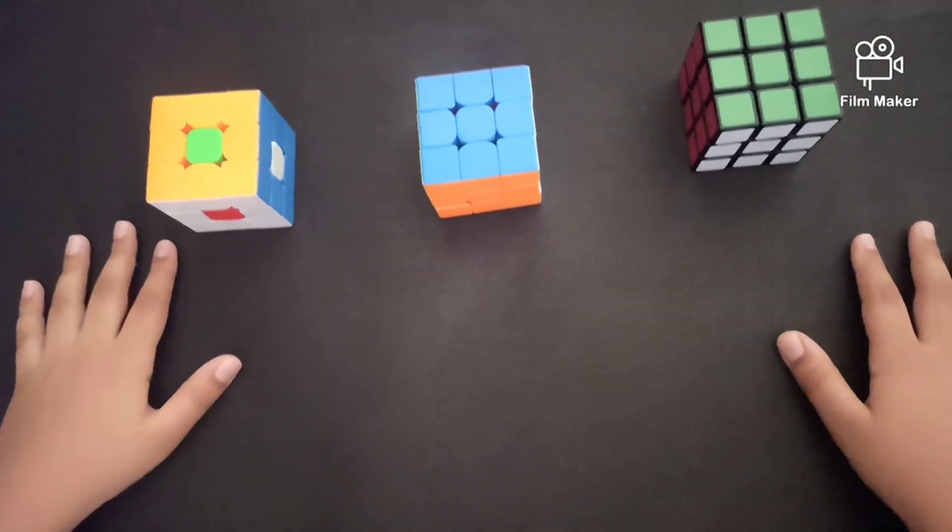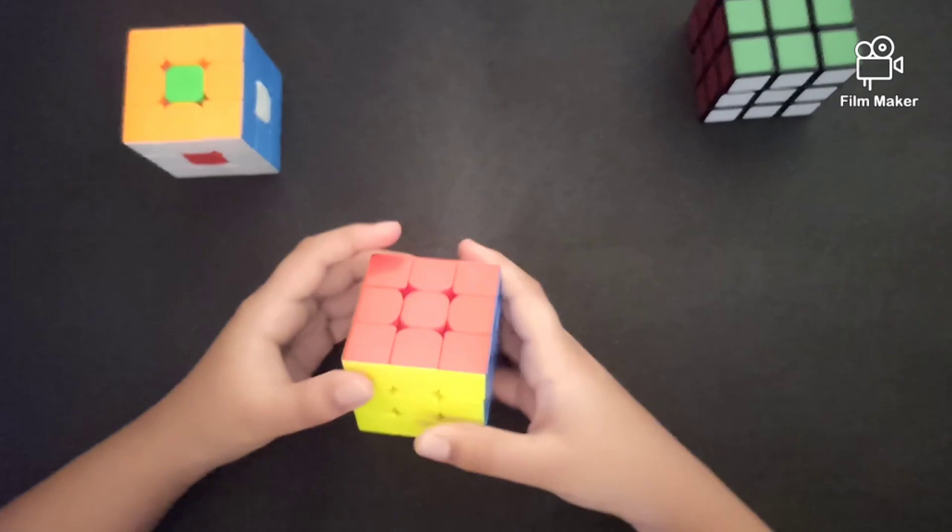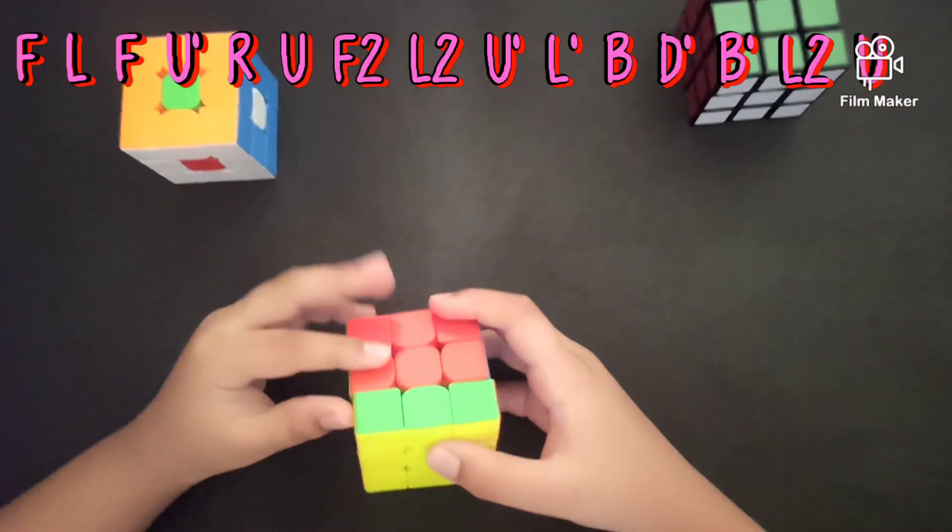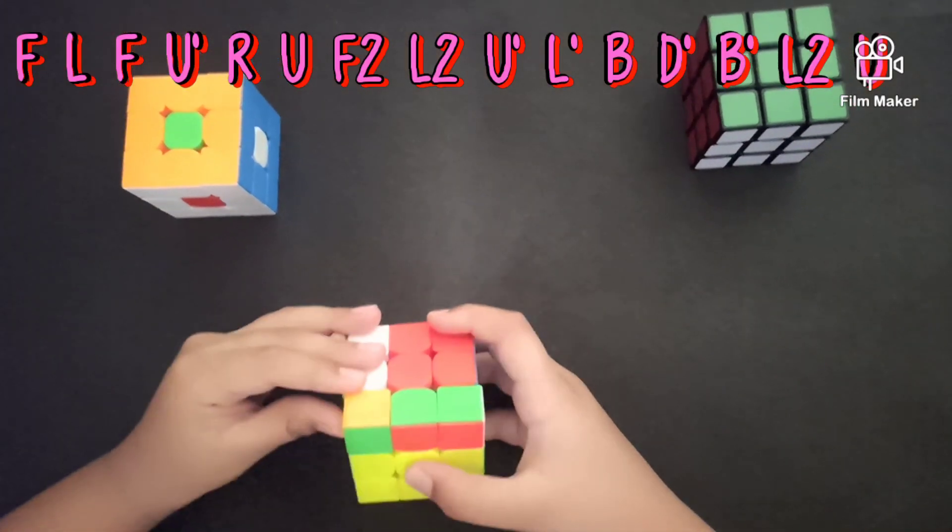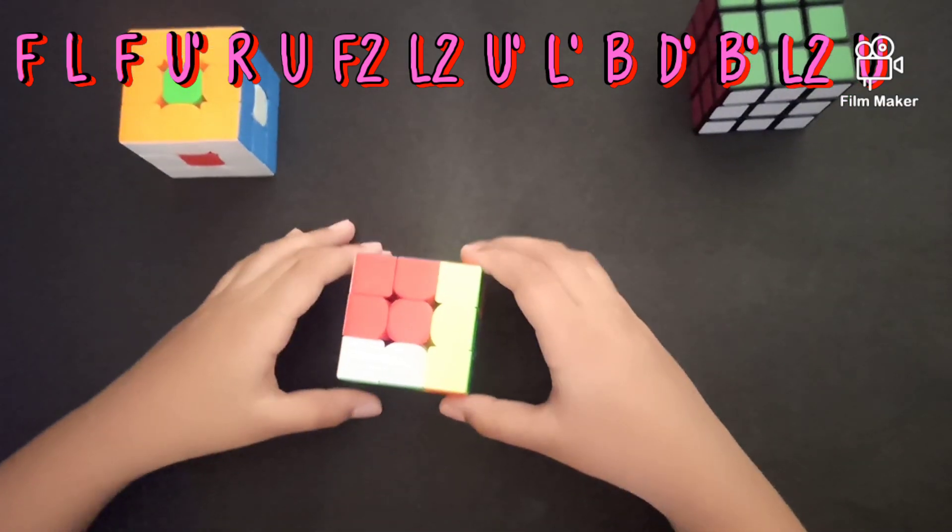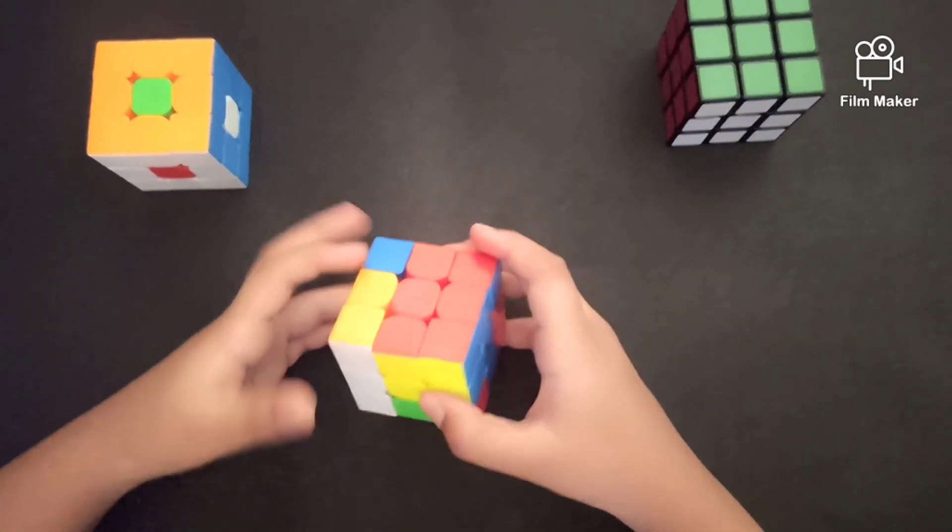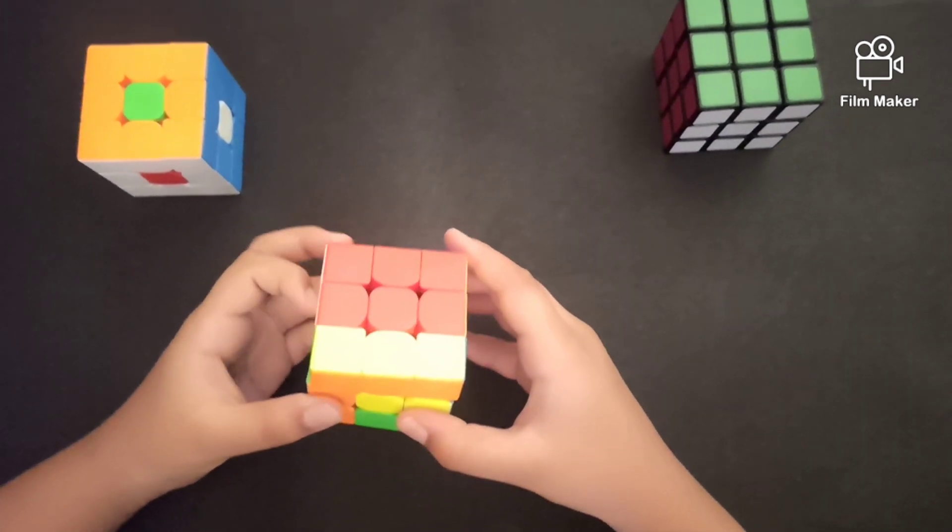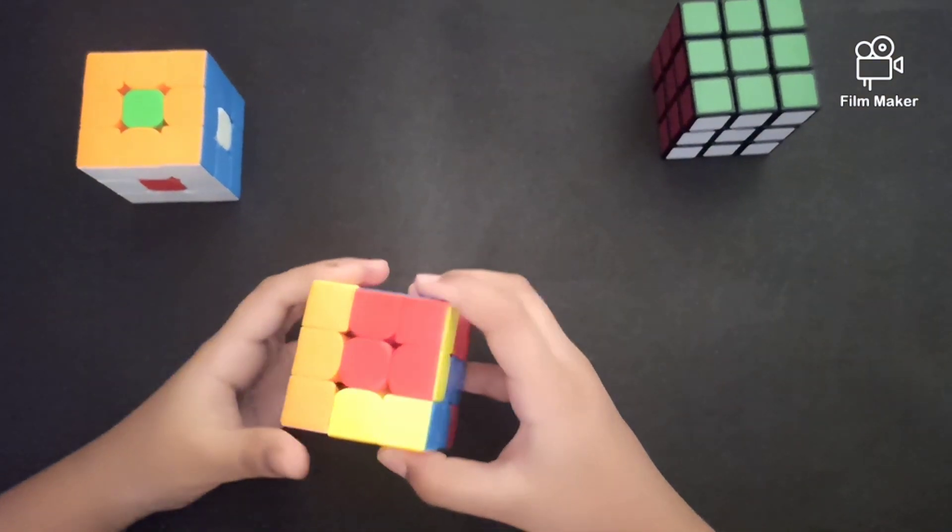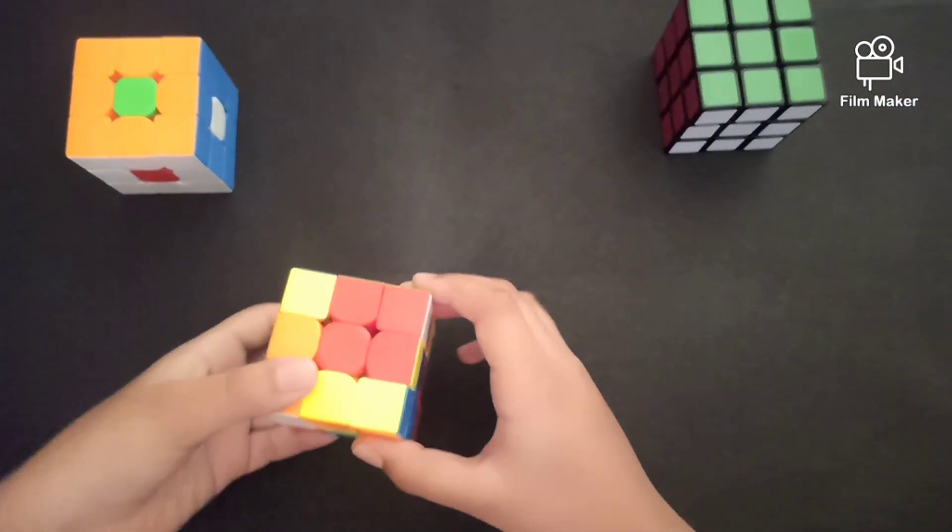Now let's see the second pattern. Our second pattern is like F L F U' R U F2 L2 U' L' B D' B' L2 U. This is the human cube pattern. Look at it.